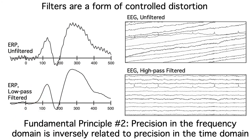This leads to fundamental principle number two: precision in the frequency domain is inversely related to precision in the time domain. Filtering increases our precision in the frequency domain by giving us a narrower band of frequencies. But when we increase our frequency domain precision this way, we're actually losing temporal resolution. Often the reduction in temporal resolution is so small that you won't even notice it, but if you heavily filter the data, you can really mess up the time domain ERP waveform.